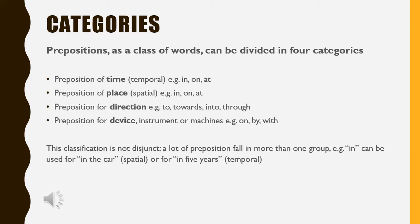Third, preposition for direction — examples: to, towards, into, through. Fourth, preposition for device, instrument, or machines — examples: on, by, with. Note that this classification is not distinct — a lot of prepositions fit in more than one group. For example, 'in' can be used for place ('in the car') or for time ('in five years').